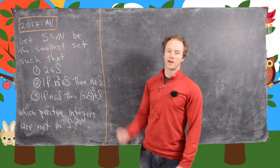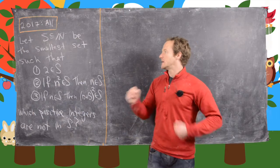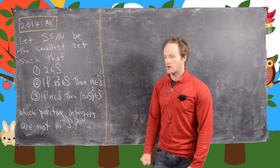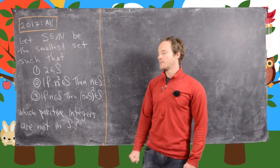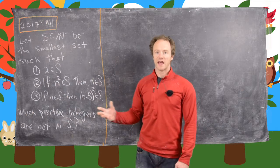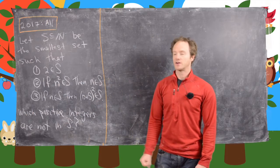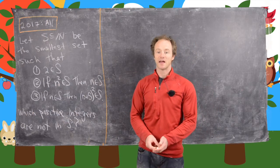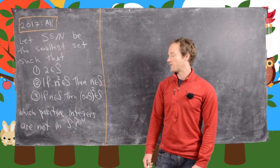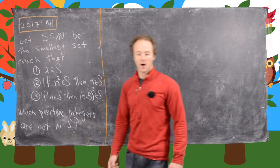And before we get started, I want to talk about what does it mean to be the smallest set that satisfies a certain criterion. And what it means is that if another set were to satisfy this criterion, then S would need to be a subset of that other set. So we'll see that in the very last step of our solution.